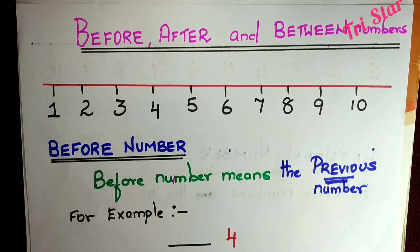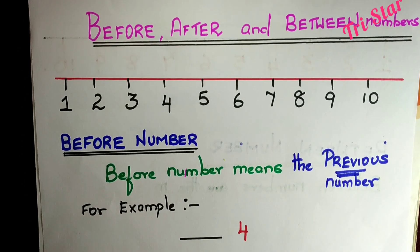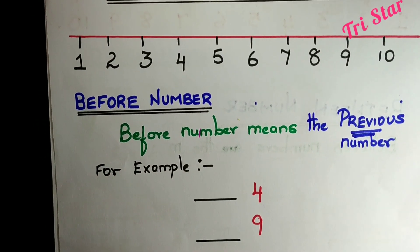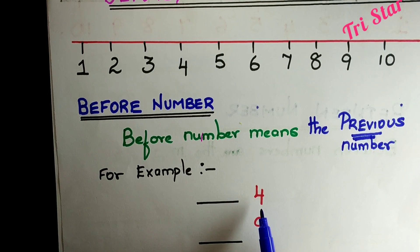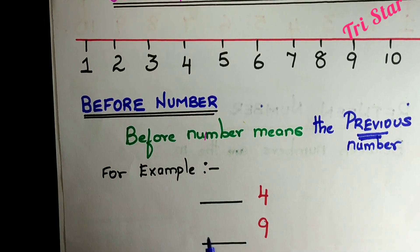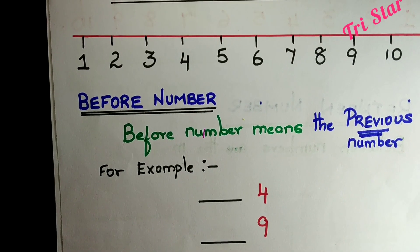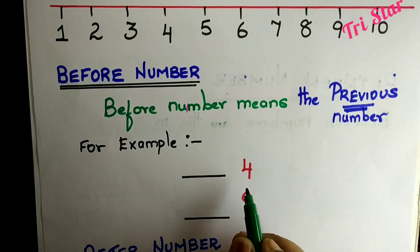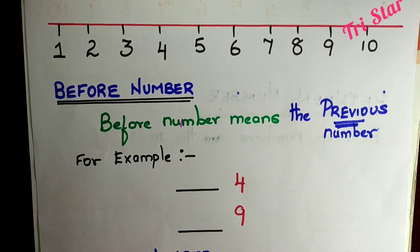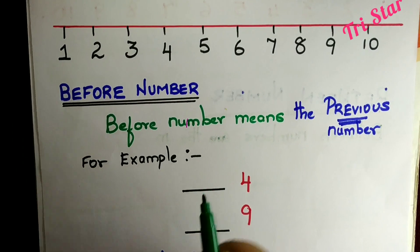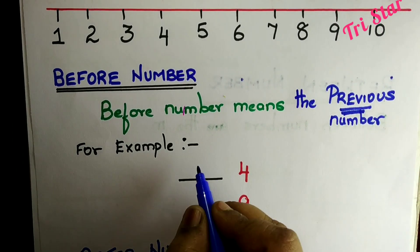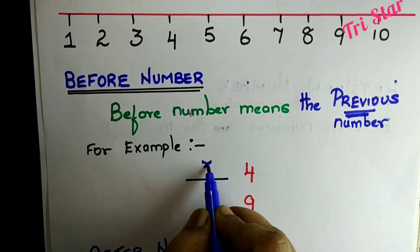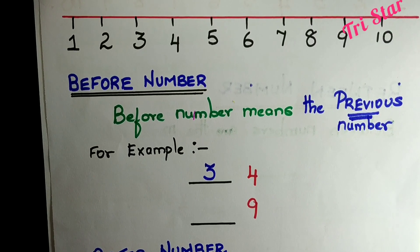Now, let us see the examples. I have given 2 examples here. First example: what is the before number of 4? That is the previous number. The previous number of 4 is 3. So, this is called the before number.